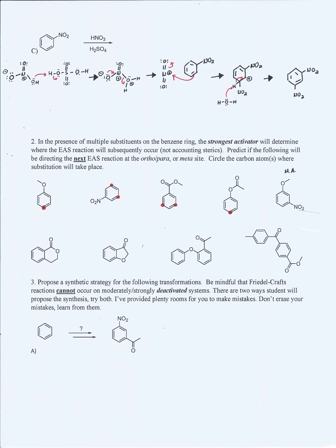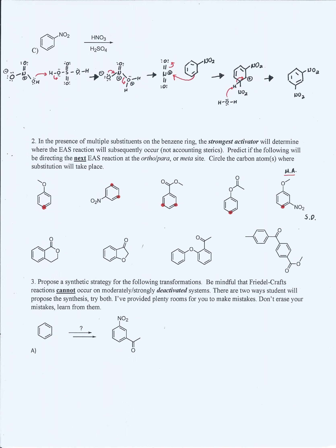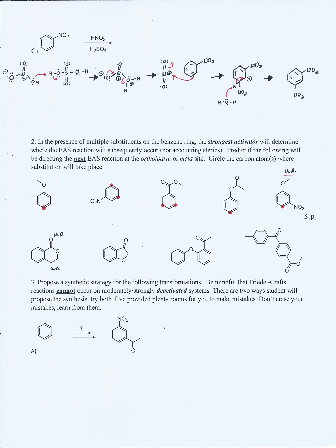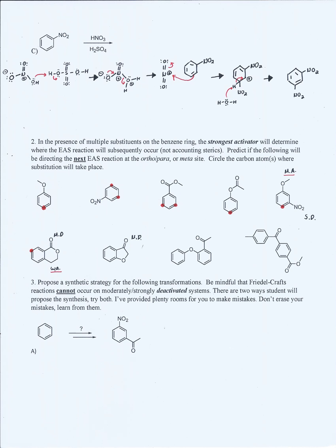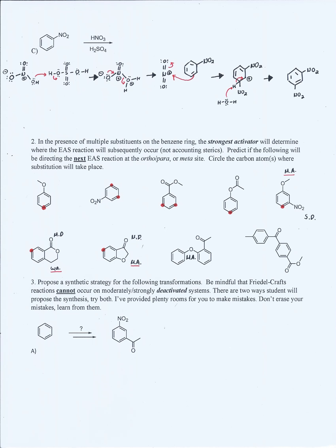The last one from the top has a moderate activator and a strong deactivator. You need to remember that an activator will always take preference, so the moderate activator will be ortho-para directing with preference of the para position. For the first one on the bottom row, we see a moderate deactivator and a weak activator. Again the activator will take preference and we circle the para position from the weak activator. The second from the bottom has a moderate deactivator and a moderate activator. Activators have more preference, so we circle the carbon in the para position from the moderate activator. The third one from the bottom has a moderate activator connecting both benzene rings and a moderate deactivator on the second benzene ring. We know that activators have more preference, so we look at the moderate activator and choose the para on the left side because there is less competition compared to the right side benzene ring where you have an activator and a deactivator competing.